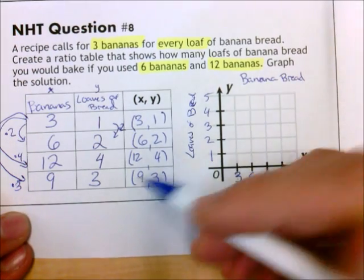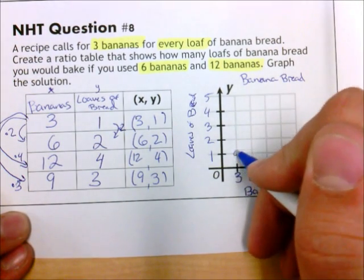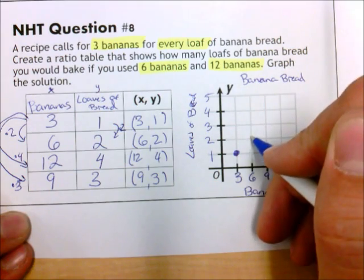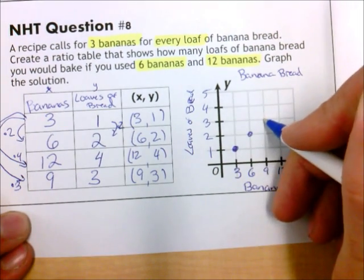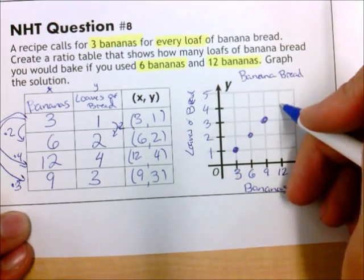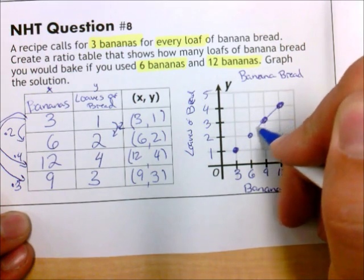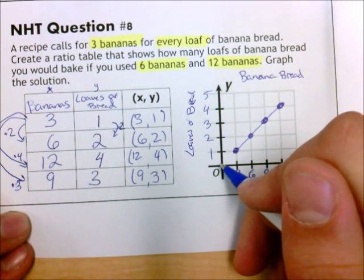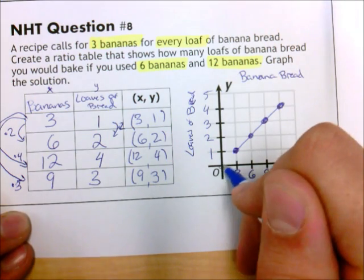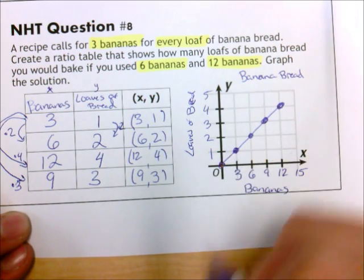And now it's as easy as 3, 1, go to 3, up 1. Go to 6, up 2, go to 9, up 3, go to 12, up 4, and connect the dots. I could say if I have 0 bananas, I will have 0 loaves of bread as well.